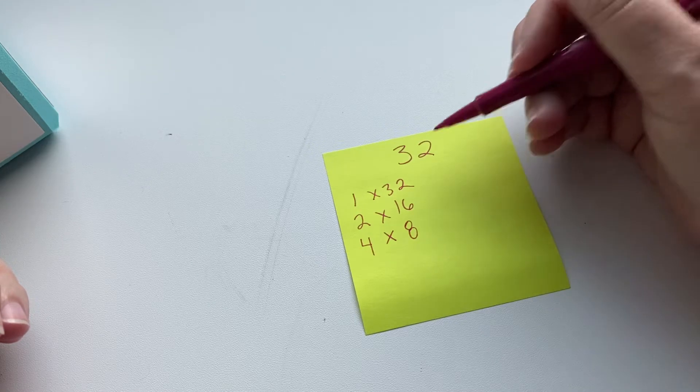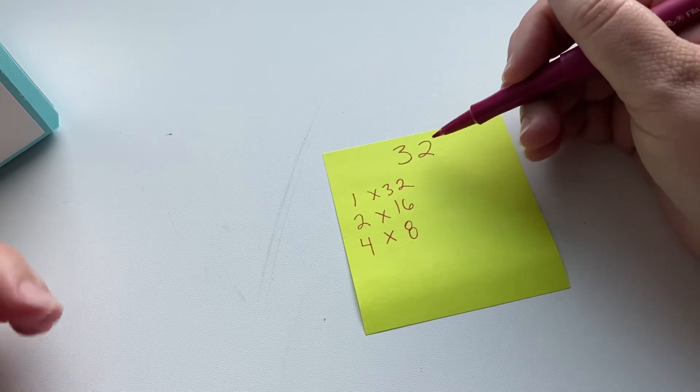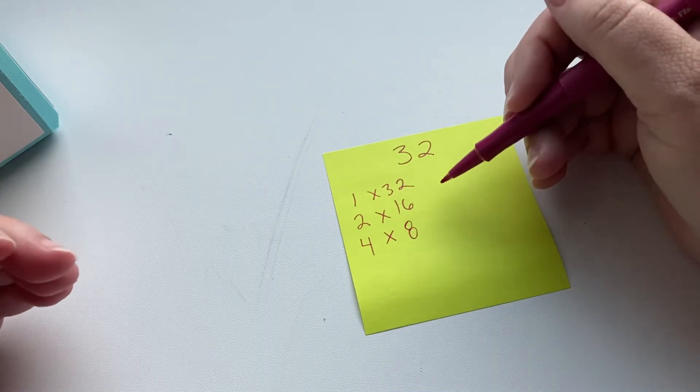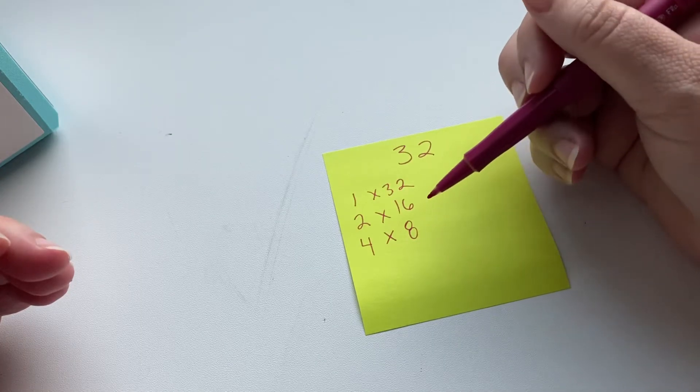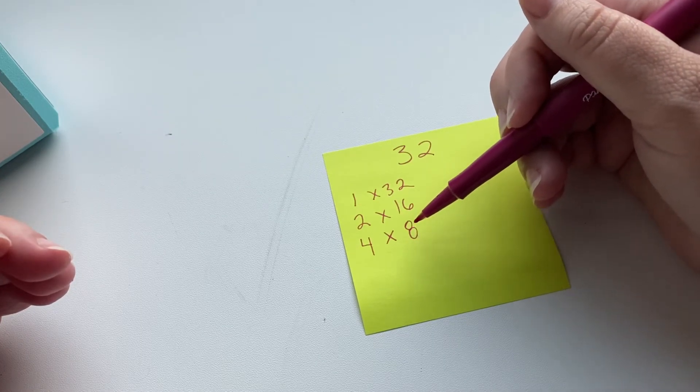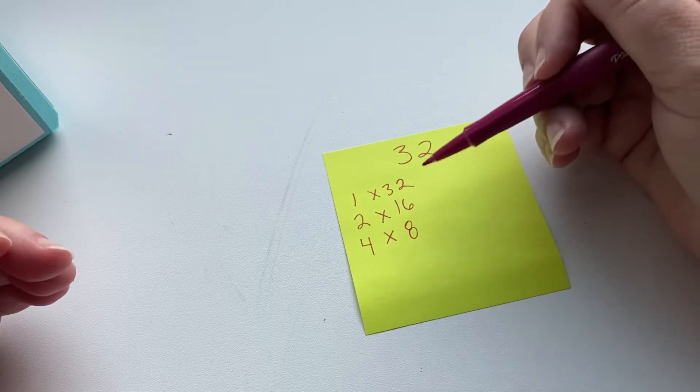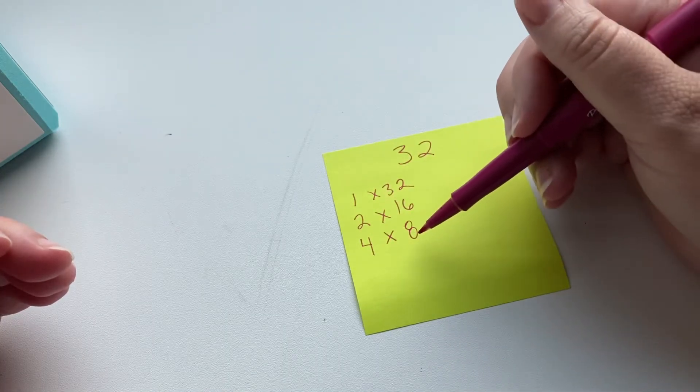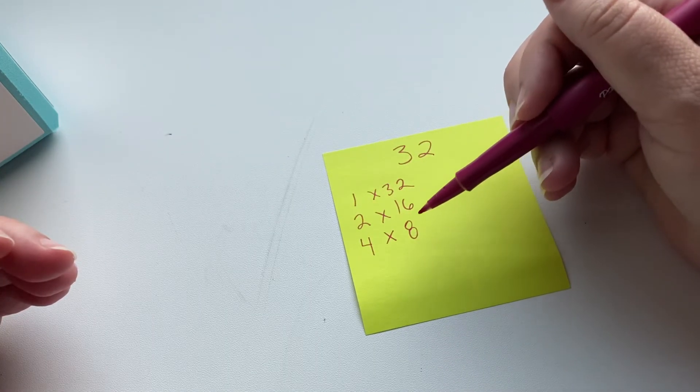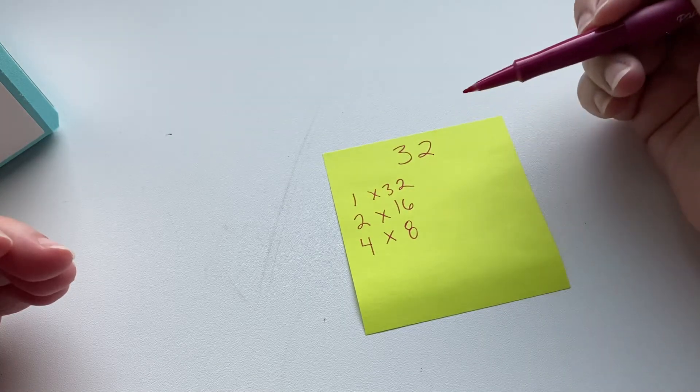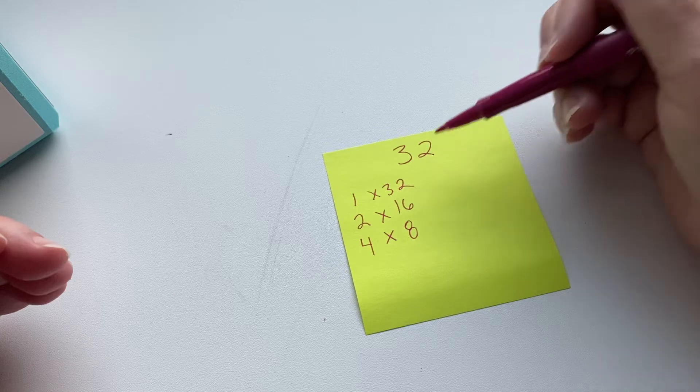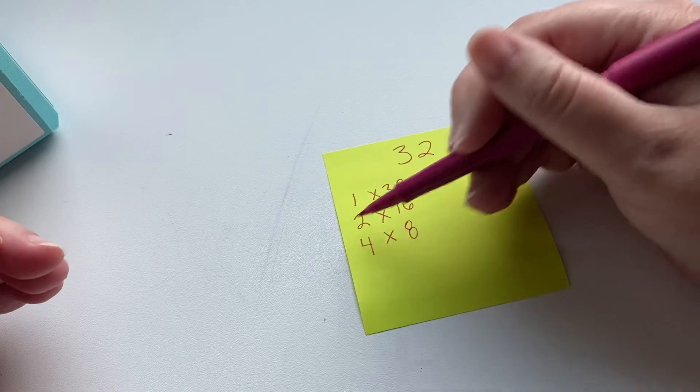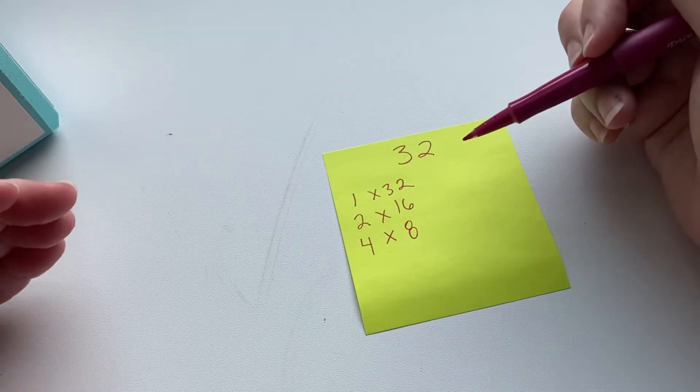And then 5 doesn't go into this. 6 doesn't go into this, because 6 goes into 30 and 36, so it doesn't go into 32. 7, that's not going to work. 8, we already have. And at this point, when we're getting up to 9 and 10 and 11 and 12, we would have already found it by the time we're getting there. So 9 through 15 don't go into it, and then we have 16, which we know is halfway. So then we're done. We don't have to go more than halfway.